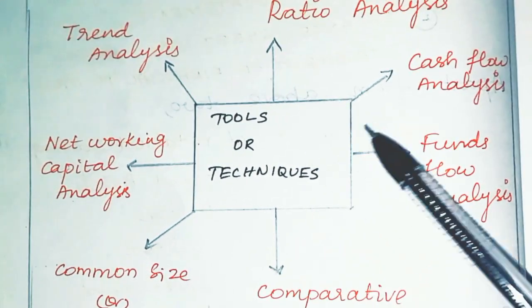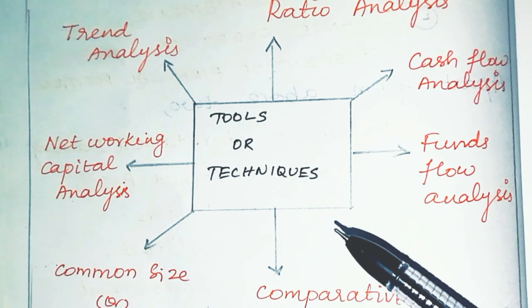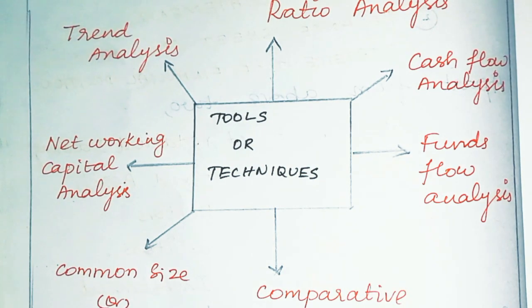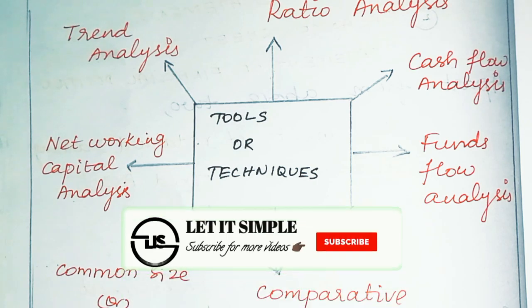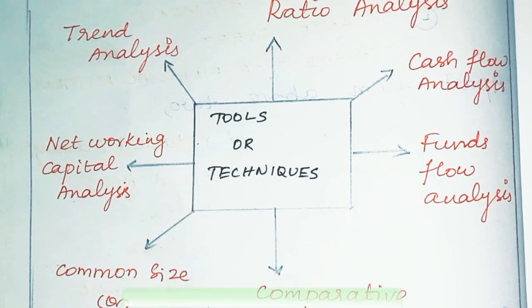So the tools and techniques we have covered are: comparative financial statement, common size ratio analysis, cash flow statement, working capital analysis, and trend analysis. We will see these in deeper detail in further videos. Hope you have understood what is financial statement analysis and what are all the tools and techniques available for analyzing a financial statement. Thank you for watching — keep sharing, liking, and commenting for more videos.